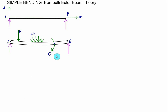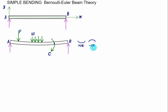The bending moment produced may be positive or negative. If we have a sagging shape — like a smiley face — the bending moment is taken as a positive value. For hogging, the bending moment is negative. We'll assume the case of positive bending, that is the sagging case.